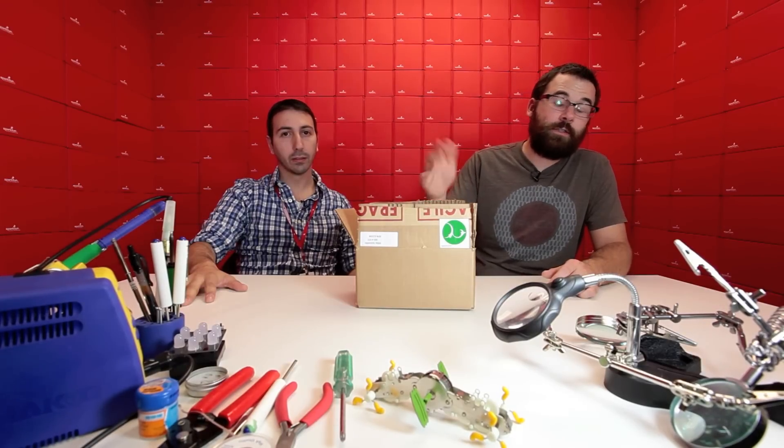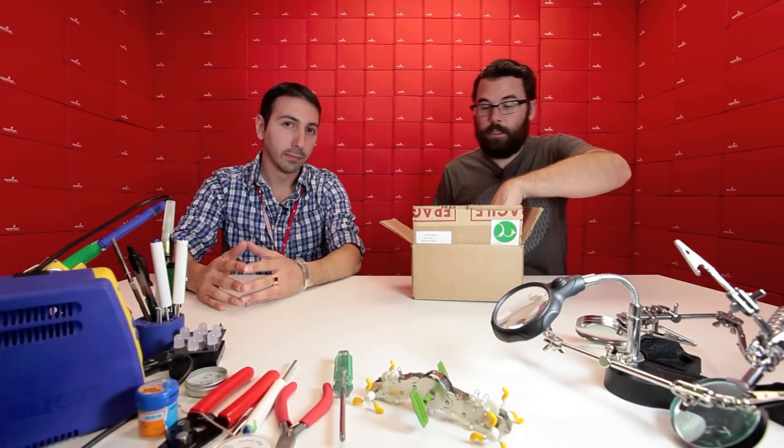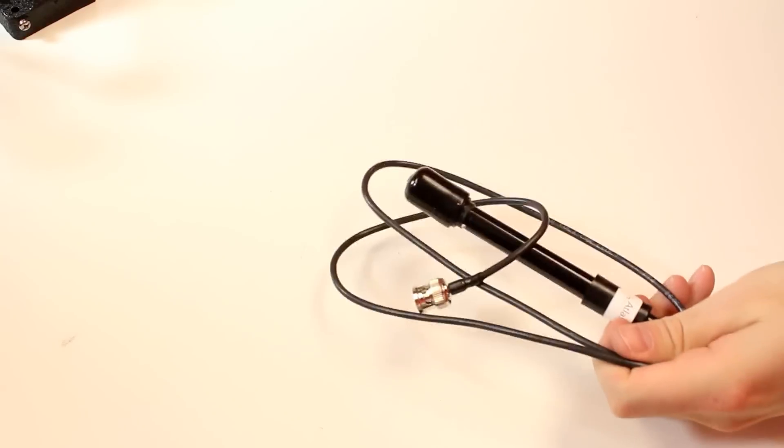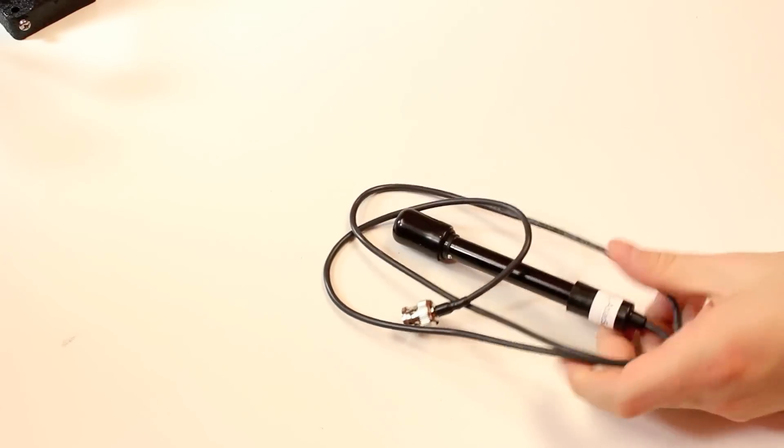This next kit is a dissolved oxygen kit. Very similarly to the electrical conductivity kit, the dissolved oxygen contains a probe, which, all these probes are different, of course, right? And we've got this. This is a little different. Can you explain that?